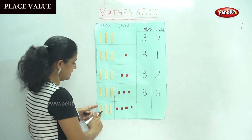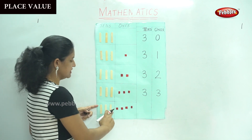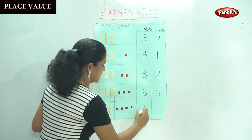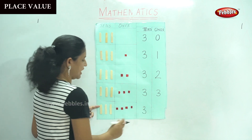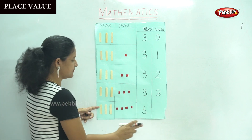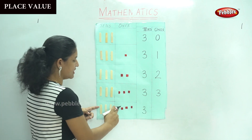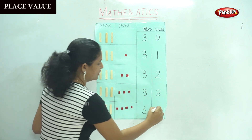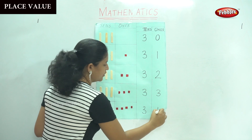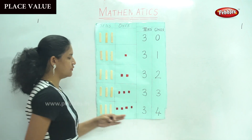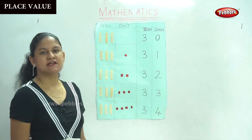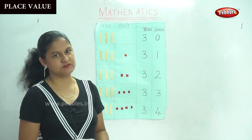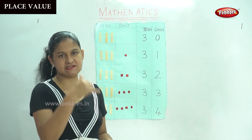The next number: ten, twenty, thirty. We have three tens, and in the ones place we have one, two, three, four — four ones, which gives us the number thirty-four. So we are going to see it again.